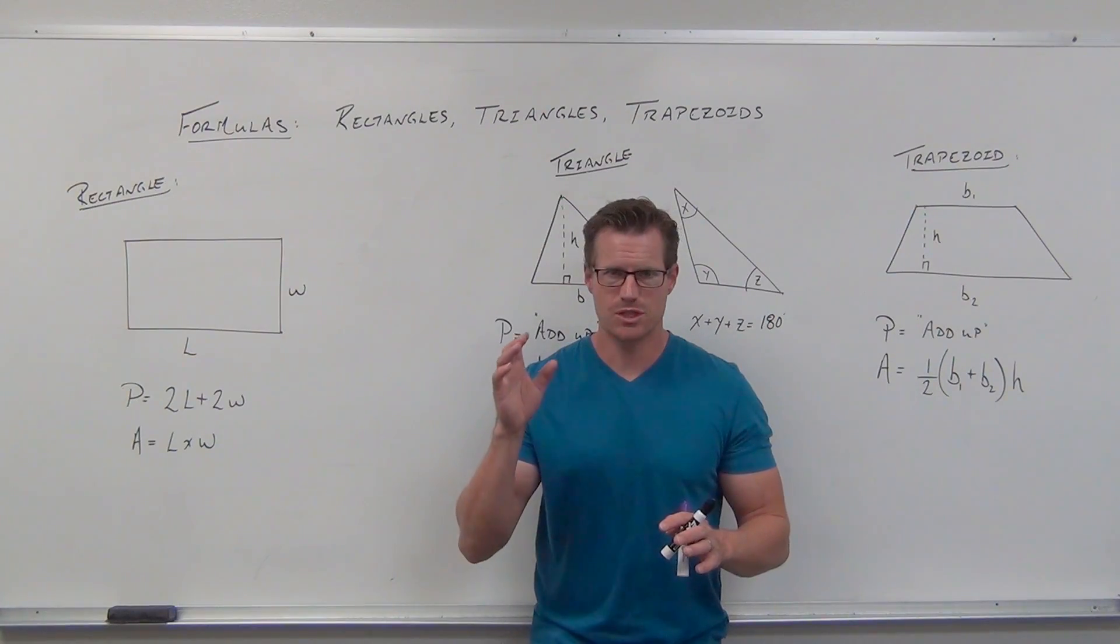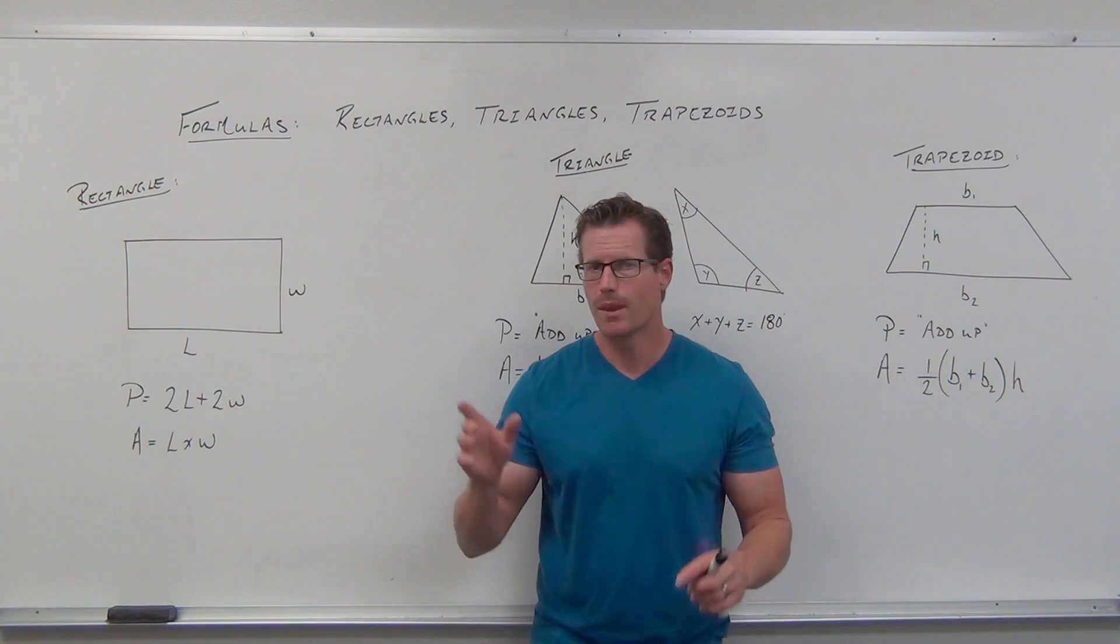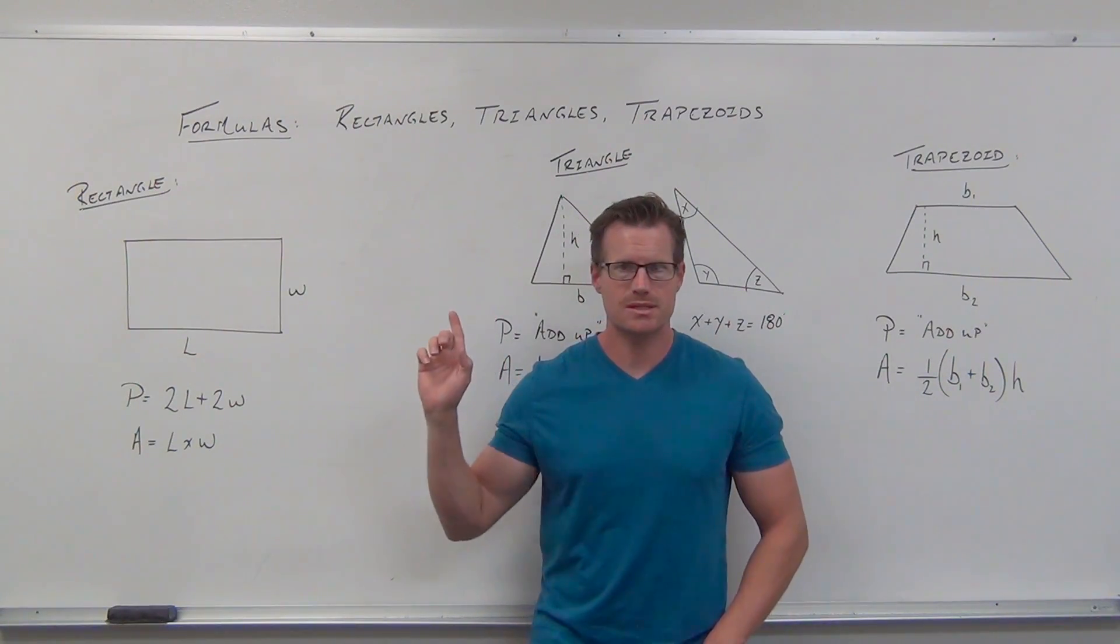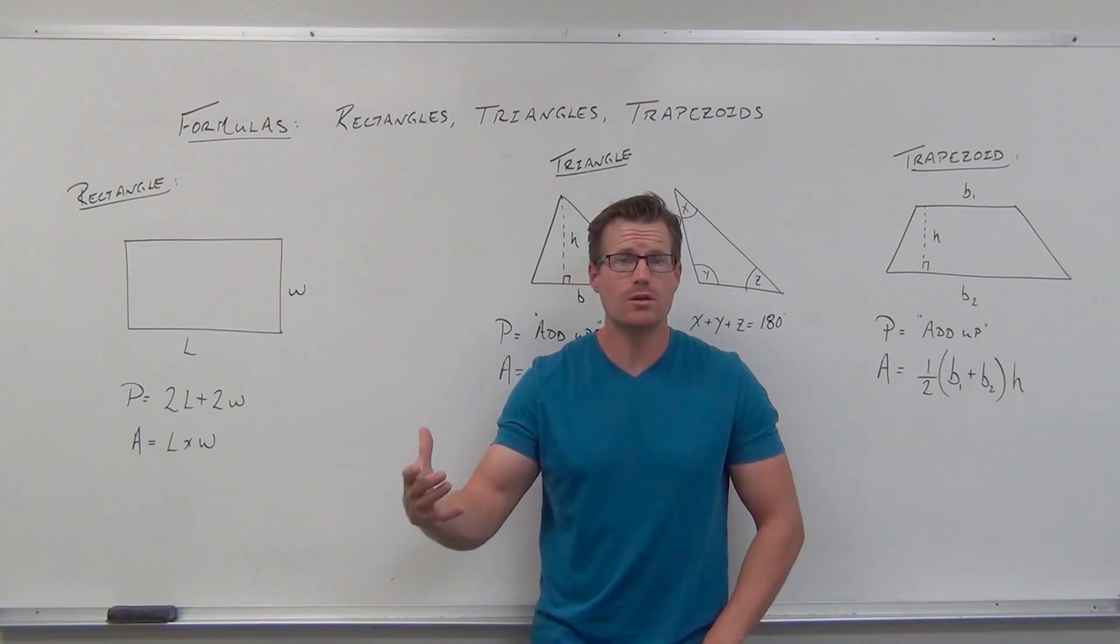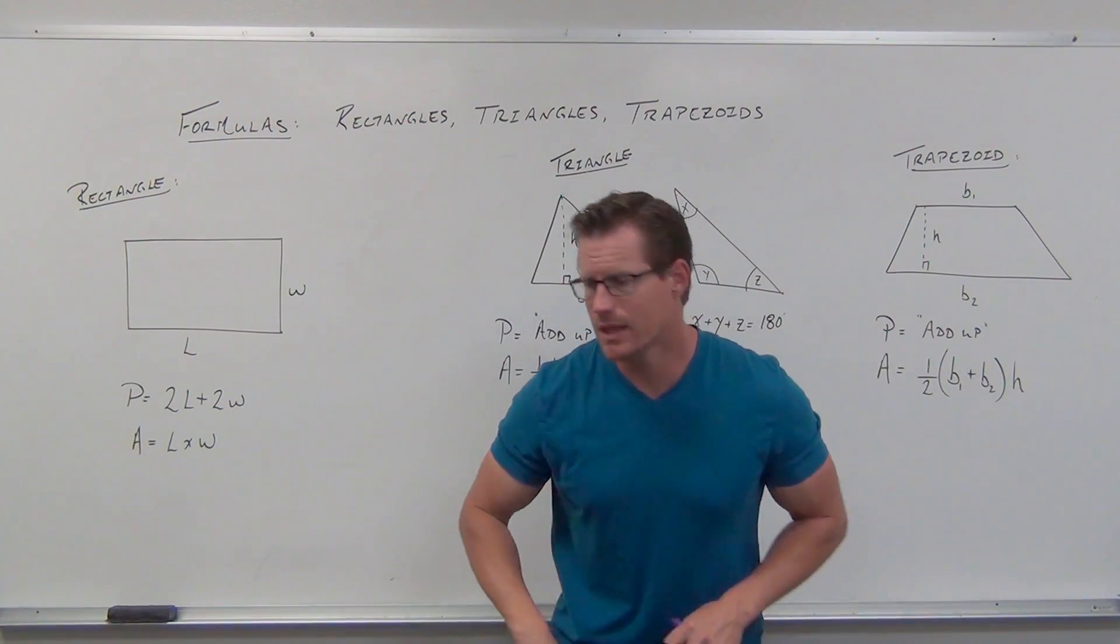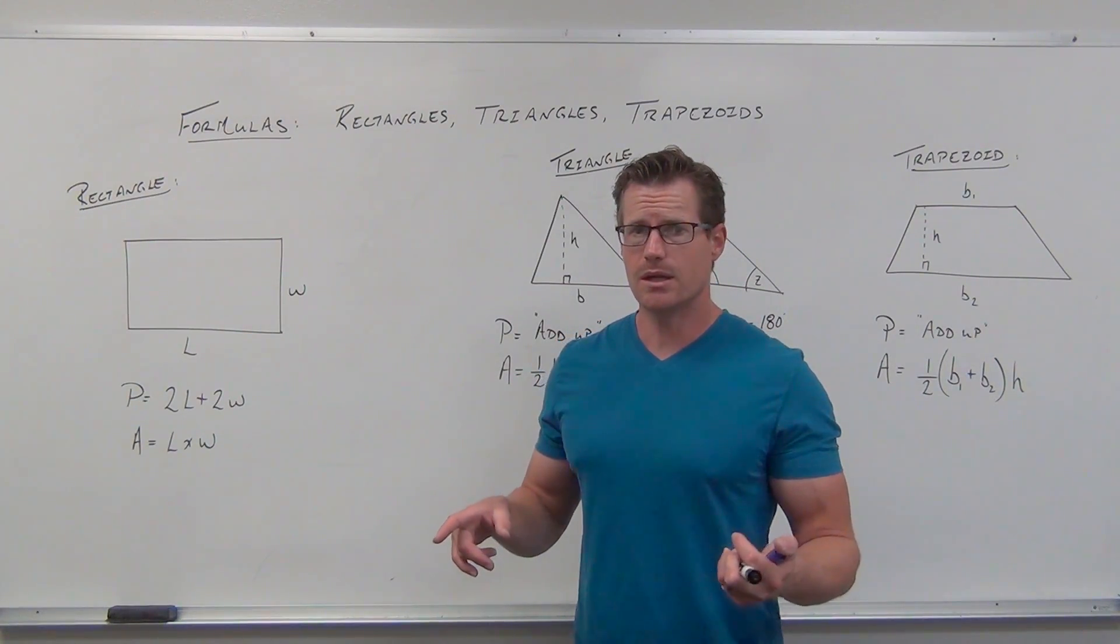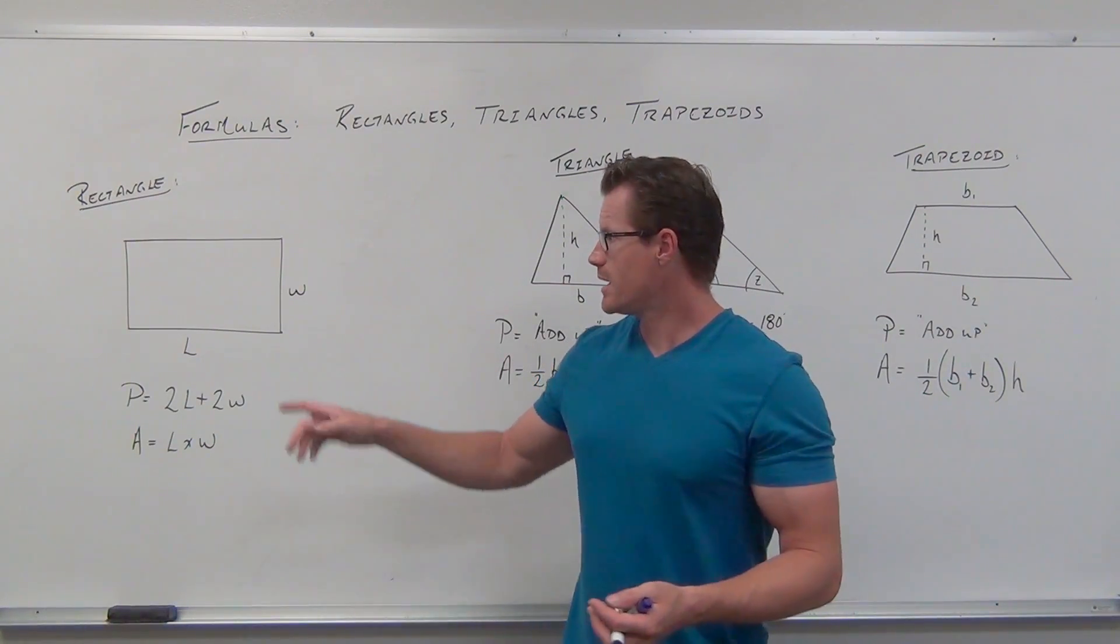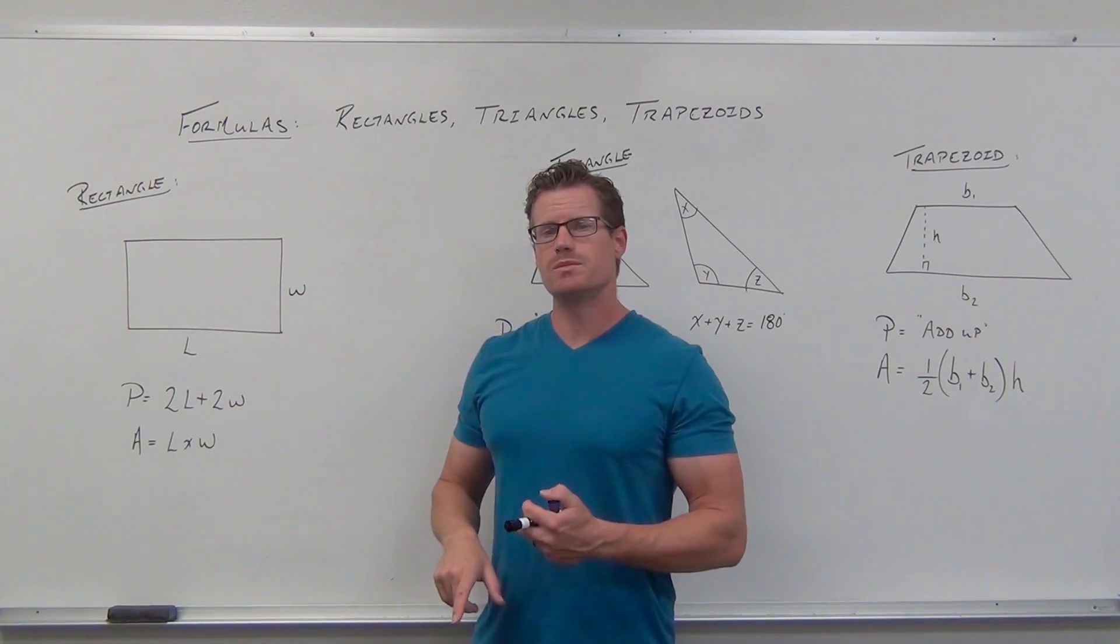Perimeter uses individual units, not square units. Area uses square units. For rectangles: rectangles have four sides where opposite sides are equal and all angles are 90 degrees. That's different from a parallelogram, which has equal opposite sides but no right angles. For a rectangle, you only need two adjacent sides to figure out everything dimensionally. If this is W, so is that one. If this is L, so is that one. For perimeter, you add up all the sides.